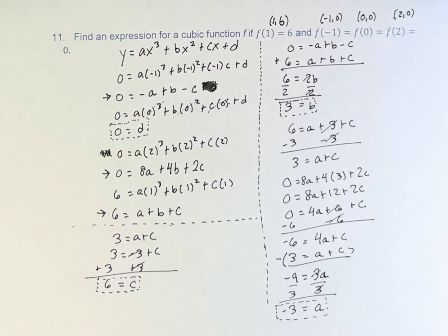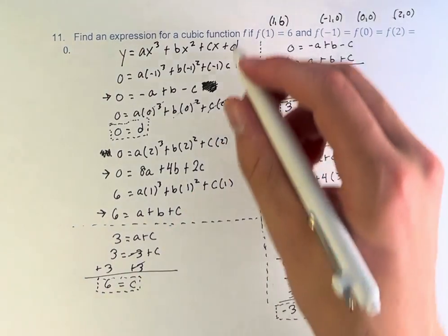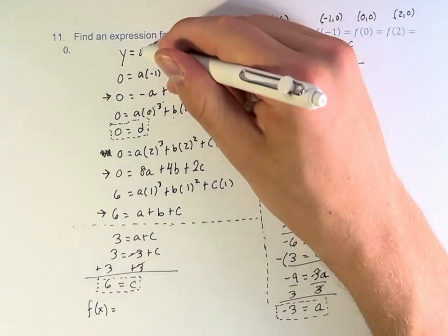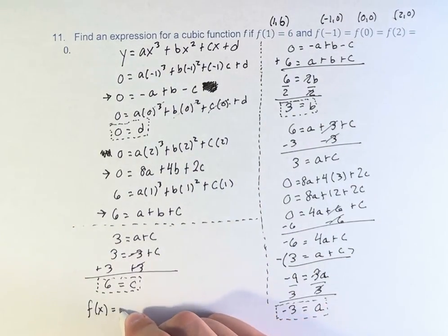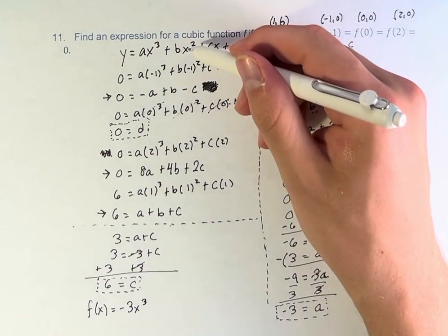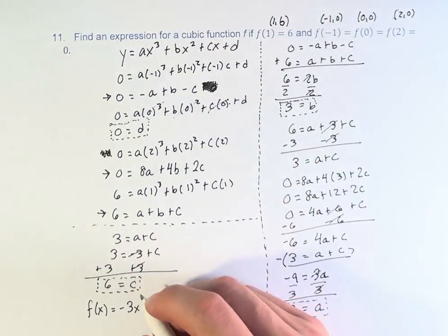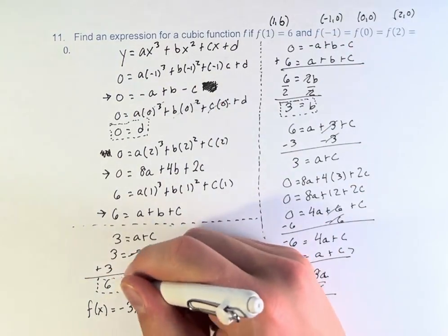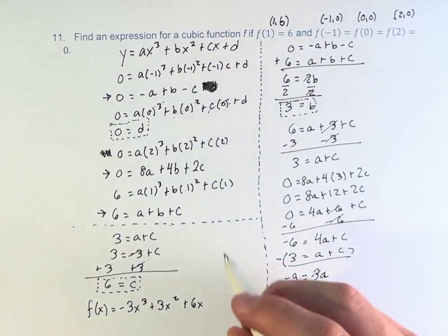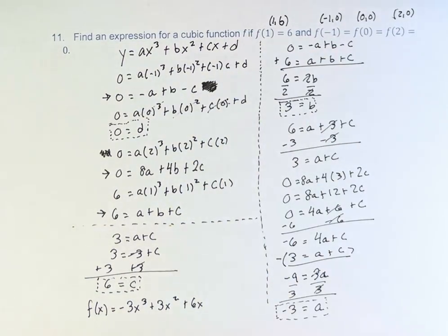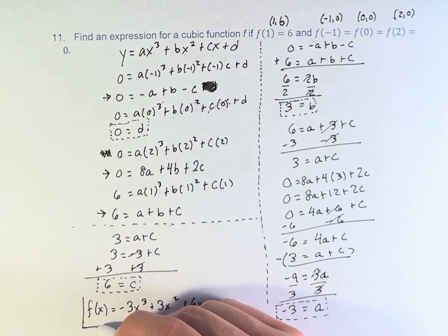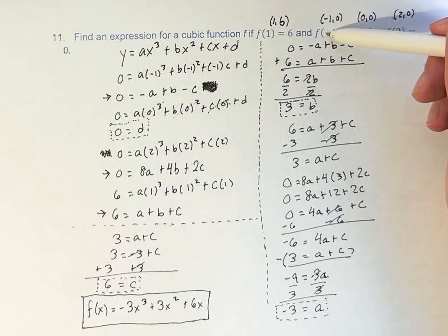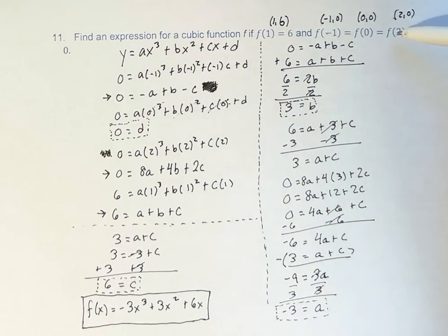So now we can create our function. We have function f of x is equal to a x cubed is negative 3 x cubed, b x squared is plus 3 x squared, plus c x is plus 6 x, and plus d is plus 0. So this is your function f of x, for which f of 1 is 6, and f of negative 1, f of 0, and f of 2 are equal to 0.